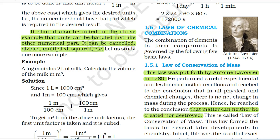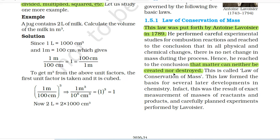1.5 Laws of Chemical Combinations. The combination of elements to form compounds is governed by the following 5 basic laws. 1.5.1 Law of Conservation of Mass. This law was put forth by Antoine Lavoisier in 1789. He performed careful experimental studies for combustion reactions and reached the conclusion that in all physical and chemical changes, there is no net change in mass during the process. Hence, matter can neither be created nor destroyed. This is called the law of conservation of mass. This law formed the basis for several later developments in chemistry.